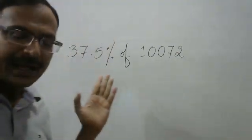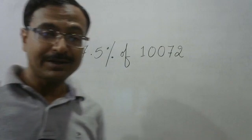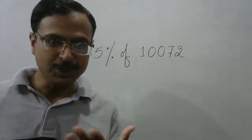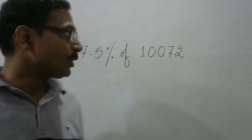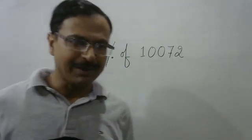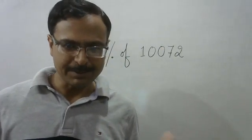Hello friends, look at this calculation written on the board: 37.5% of 10072. A huge calculation, right? Because this is not a base quantity, and neither is 37.5 a base quantity. Whenever you have base quantities, the calculations become very easy.